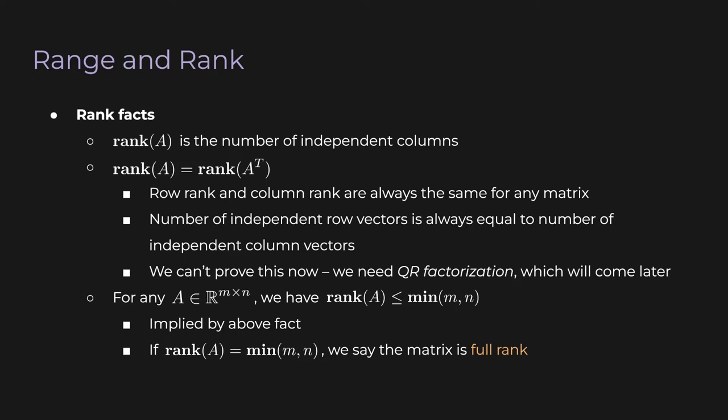However, the column rank and row rank of A are always equal. This isn't obvious — to prove it, we need to use a tool called QR factorization, which we'll cover in a later lecture. For now, you can just think of this as an important fact. This fact implies that the rank of A must be less than or equal to the minimum of M and N. For example, if M is less than N, then the rank must be less than M, and vice versa. In particular, if the rank of A is exactly the minimum of M and N, then we say the matrix is full rank — meaning the matrix has the maximum possible rank it could have.